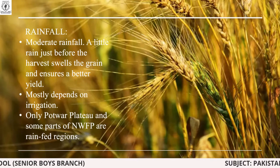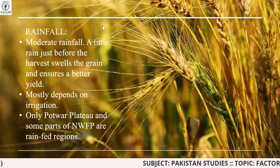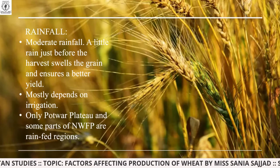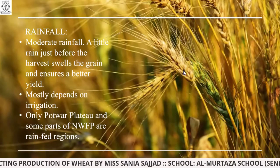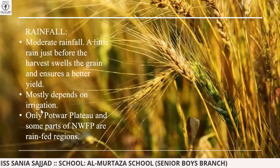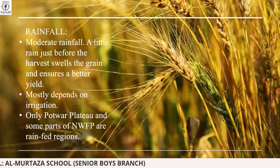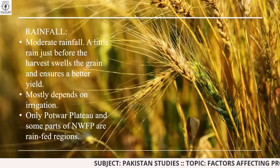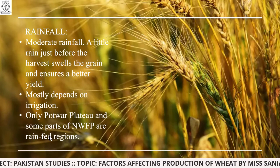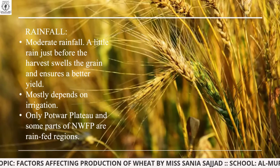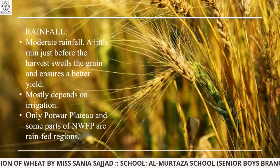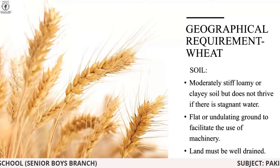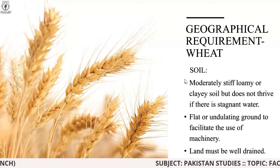Coming to rainfall: wheat needs moderate rainfall. A little rain just before harvest swells the grain and ensures a better yield. If rainfall is excessive, it can cause flooding and water logging. Wheat is most dependent on adequate irrigation — if irrigation is not proper, it will destroy the crops. Only the Pothohar Plateau and some parts of NWFP are rain-fed regions where there is moderate rainfall.